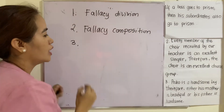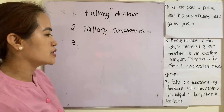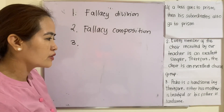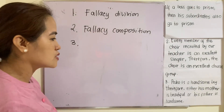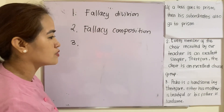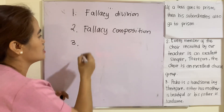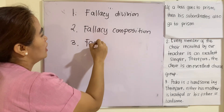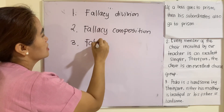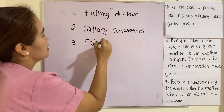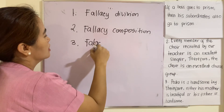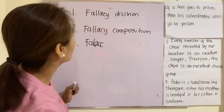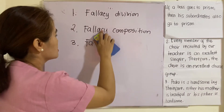Example one is a fallacy of division, because the characteristics of the whole are attributed to the individual parts. Example two: every member of the choir recruited by our teacher is an excellent singer; therefore the choir is an excellent choral group. This one is a fallacy of composition. Example three: Pedro is a handsome boy; therefore either his mother is beautiful or his father is handsome. This one is a fallacy of relevance.